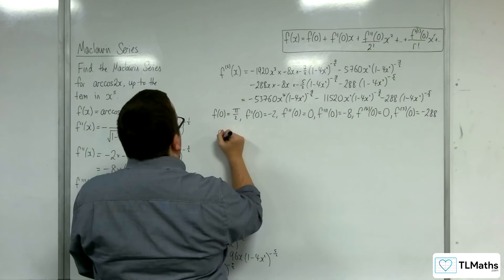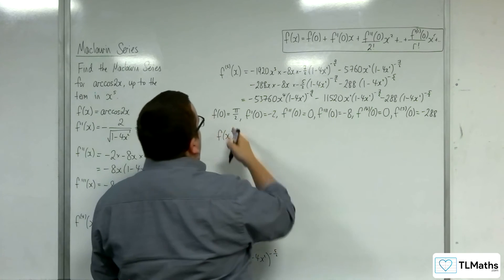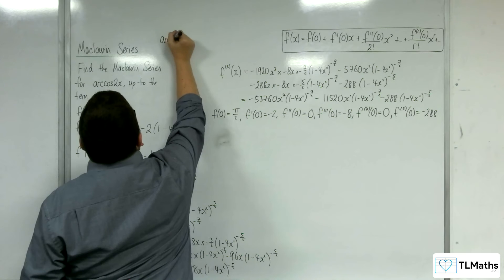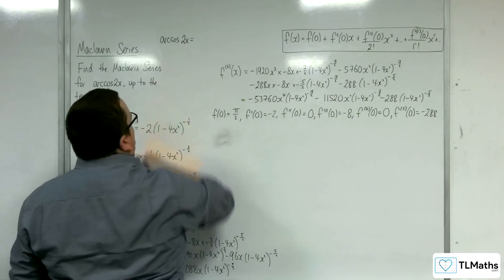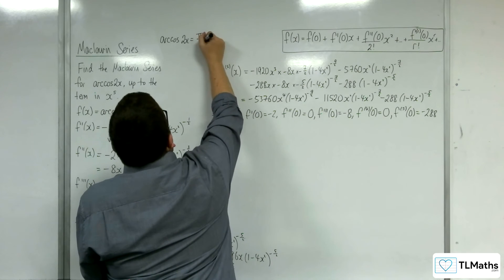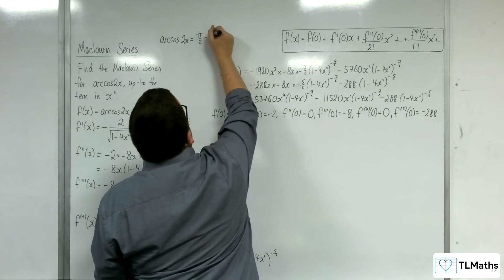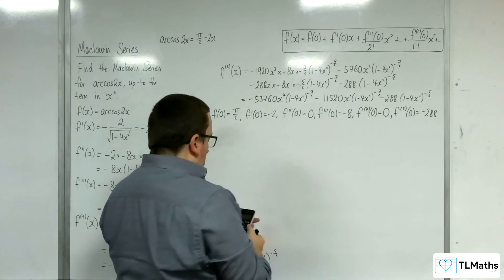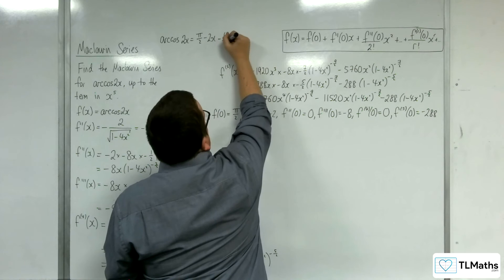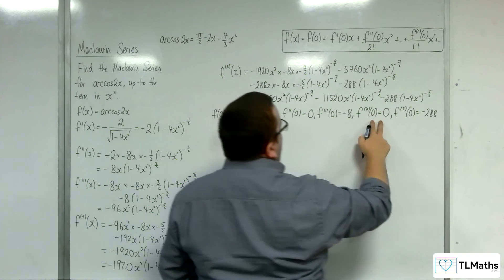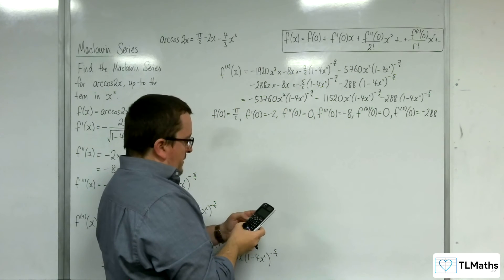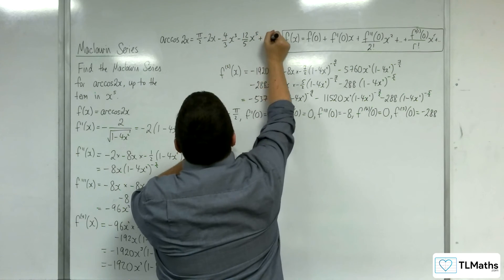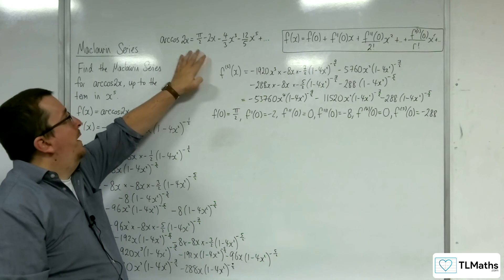So arccos(2x) equals f(0) which is pi over 2, then minus 2x, then plus 0, then minus 8 over 3 factorial — that's minus 8 over 6, so minus four thirds x cubed, then 0, then minus 288 divided by 5 factorial — that's minus 12 fifths x to the 5, et cetera. That is the Maclaurin series for arccos(2x).